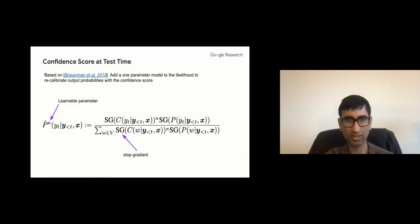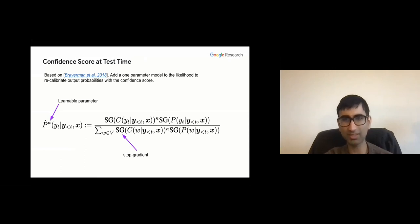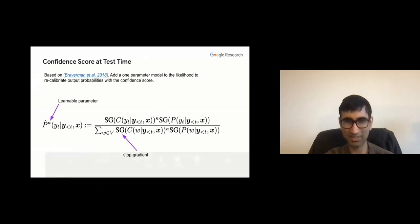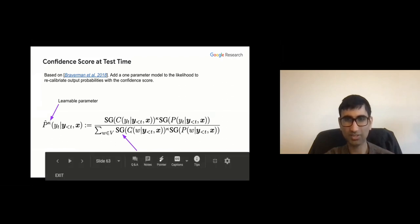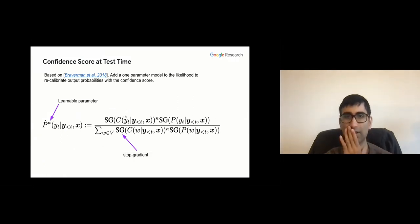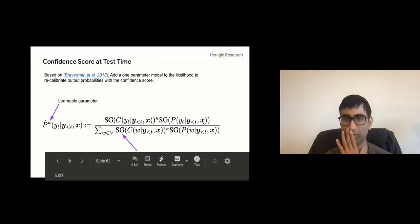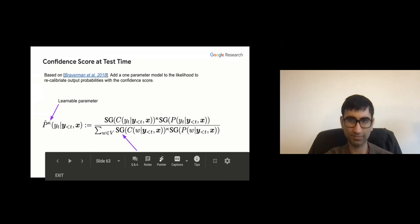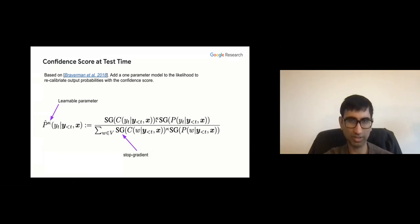We also have a calibration trick from Braverman et al. where you add an additional term to the likelihood. In this term, no parameters are being learned except for kappa — everything else has a stop gradient. The confidence score re-weights the output probability distribution based on confidence. When kappa is zero, you result to the normal unmodified output, and typically the model learns a non-zero value of kappa.